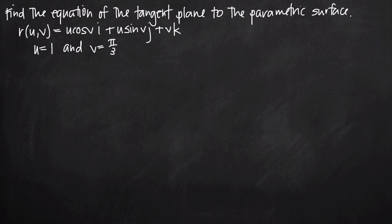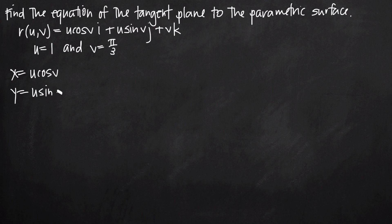With these kinds of problems the first thing we always want to do is pull out parametric equations for x, y, and z from the vector equation. We grab them from the coefficients in front of i, j, and k respectively. So x equals u cosine of v, y equals u sine of v, and z equals v.